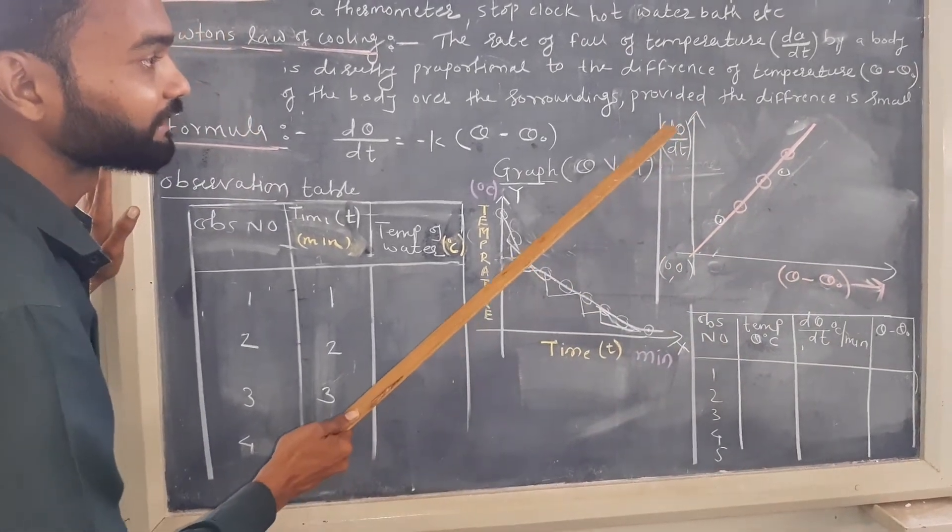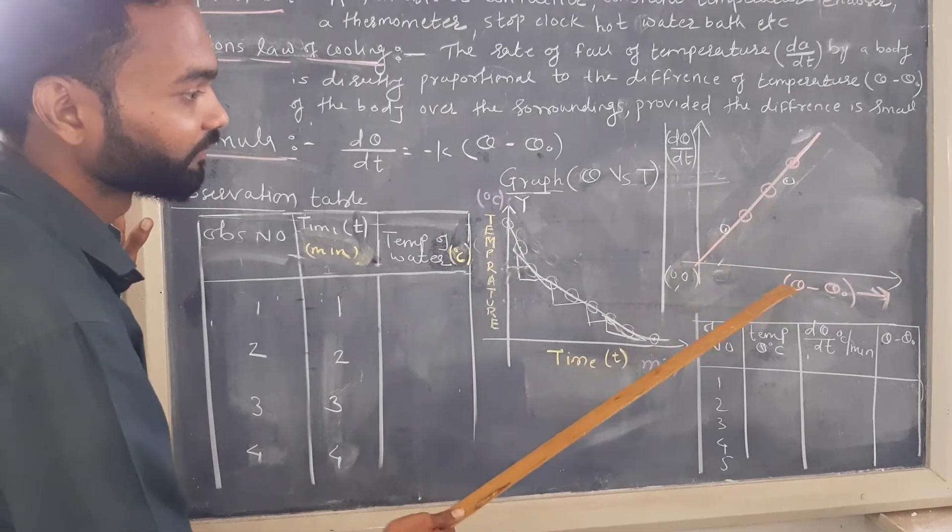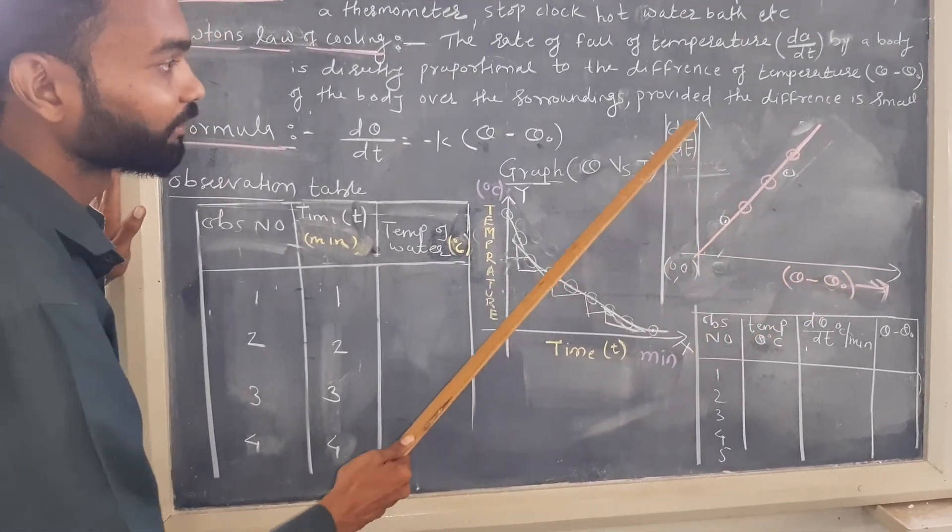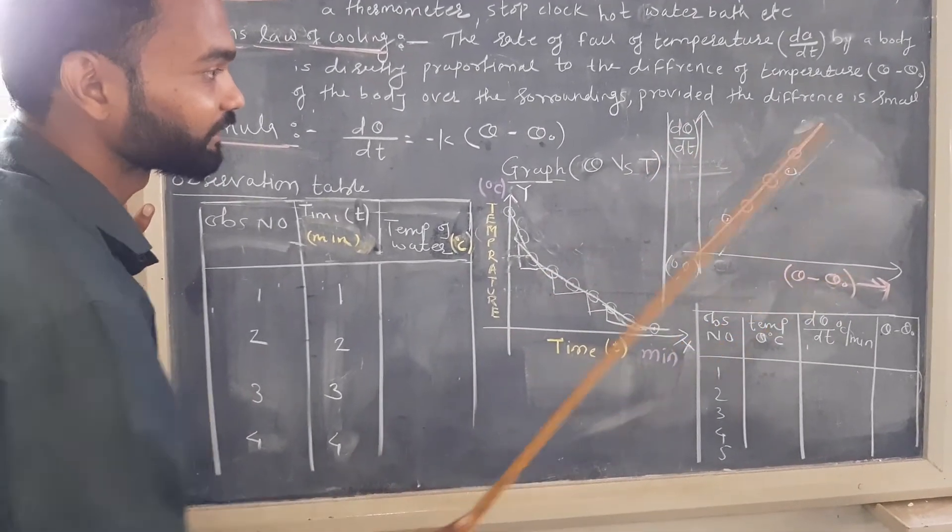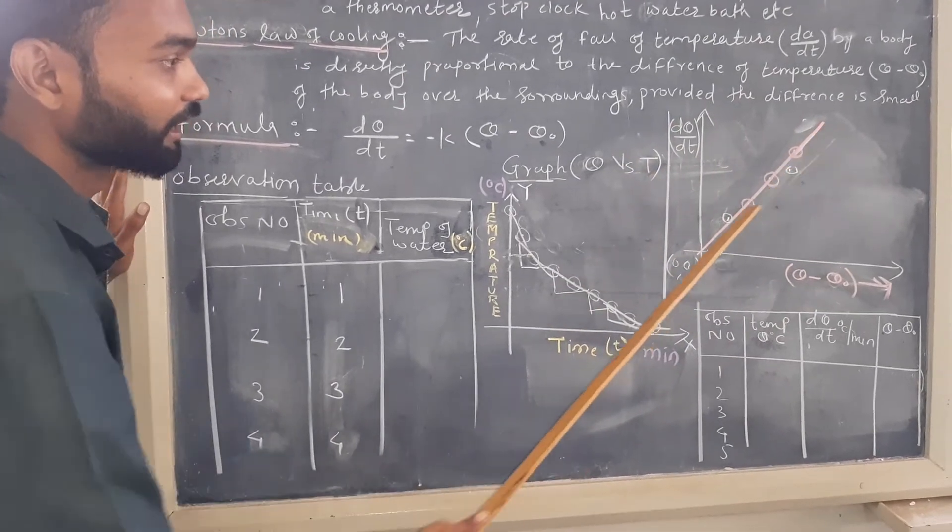Excess temperature, sorry, rate of fall of temperature versus excess temperature. And nature of the graph is like this.